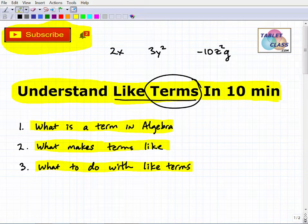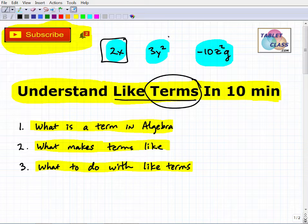All right, so each one of these guys right here is considered a term in algebra. So when you see things in algebra, and what makes algebra, algebra versus arithmetic or basic elementary math, is we have variables, right? So we have a number and a variable, a number and some sort of variable along with it, and a number and more variables. So each one of these components here is considered a term in algebra.